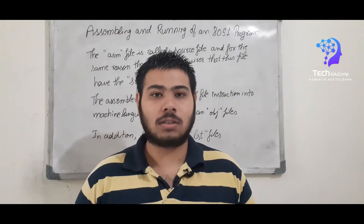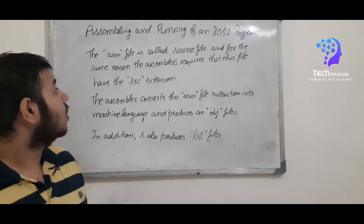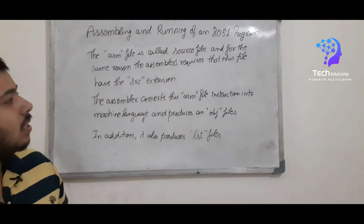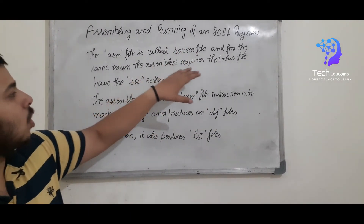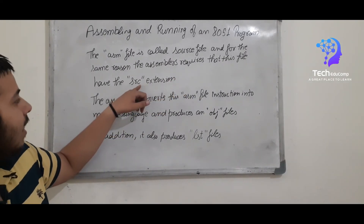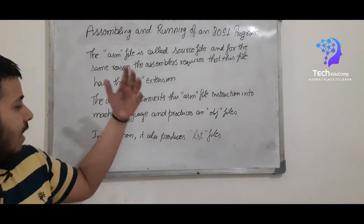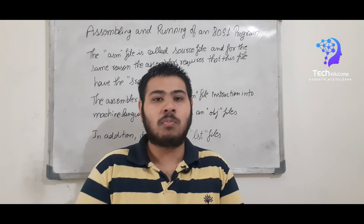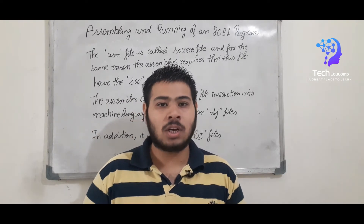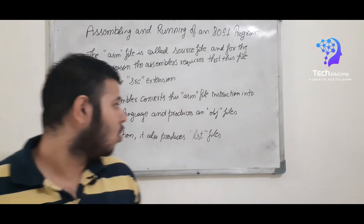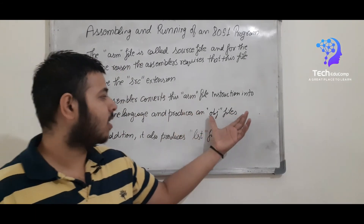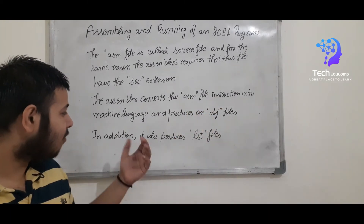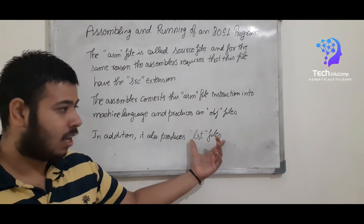Let's talk about the assembly language file. The assembly language file is also called the source file, and for the same reason the assembler requires this file with the .SRC extension. The assembler converts this file, which contains the program code, into machine language. As you all know, a microcontroller understands only binary language. It produces an object file, and along with this object file, another file is also created called the list file.